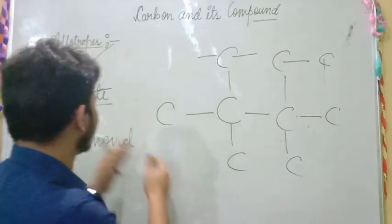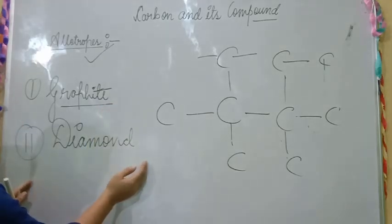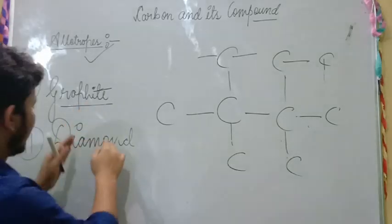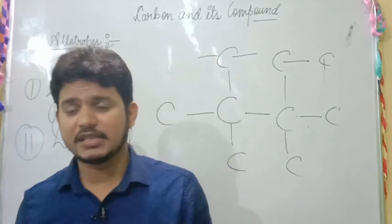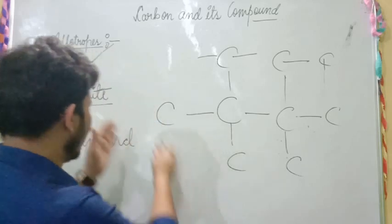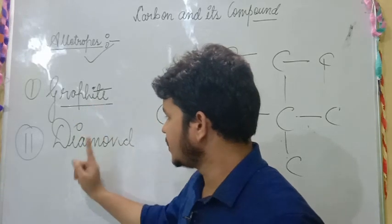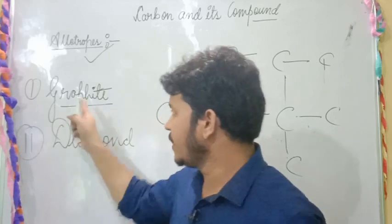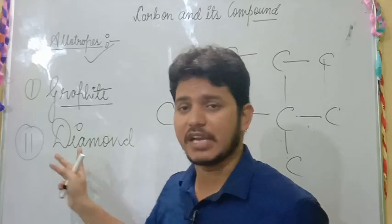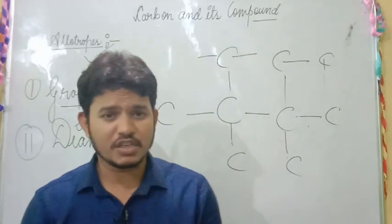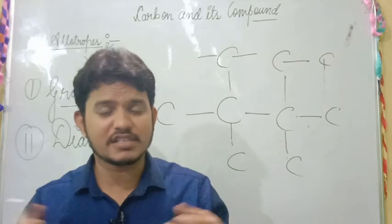Both graphite and diamond are different forms of carbon — allotropes of carbon. But graphite is soft and diamond is very hard. This is because the atoms are arranged in a different way. In graphite, one carbon is bonded to three carbons; in diamond, one carbon is bonded to four other carbons. This arrangement gives them different physical properties and different structures.